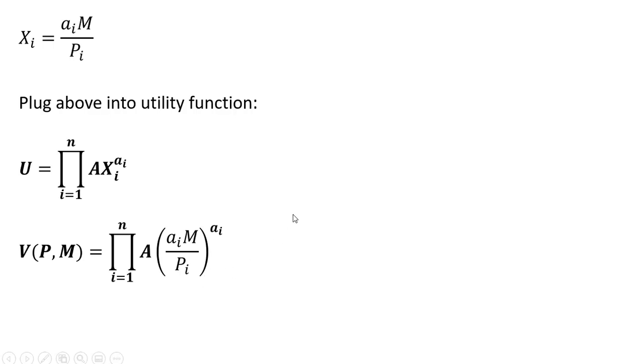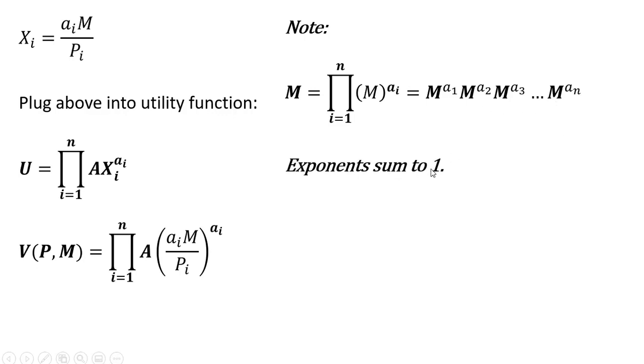And if we want, we could simplify it up a little bit. Note here that money income raised to the alpha subscript i equals the following. And since the exponents sum to 1, that's just going to all equal M. So M just will equal the following. So I'm going to bring the A and M out in front here of the product operator, and you're left with this result.